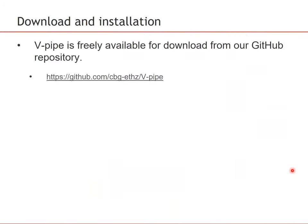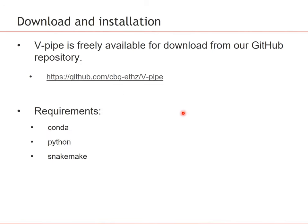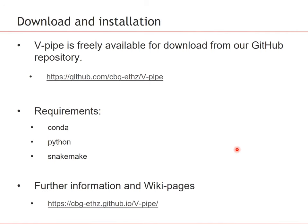Getting started with vPipe is very easy. vPipe is freely available for download from our GitHub repository. The requirements are Conda, Python, and Snakemake, and everything else can be done via vPipe itself by invoking use-Conda and other switches. There is further information and documentation on the website, including wiki pages where everything is documented in detail.